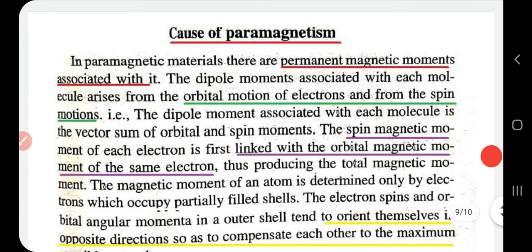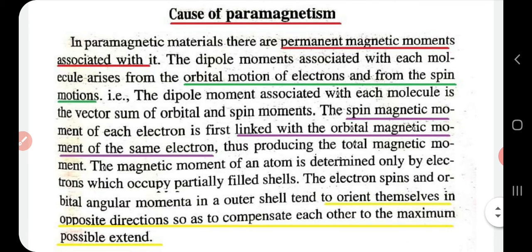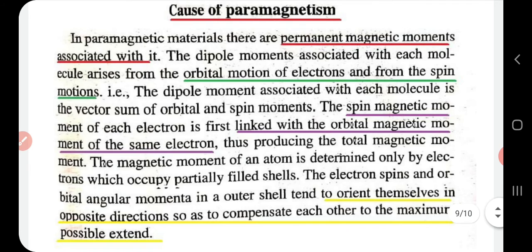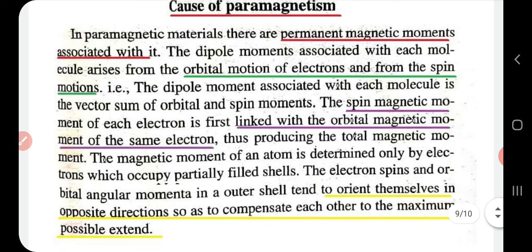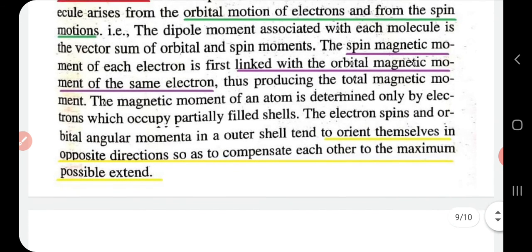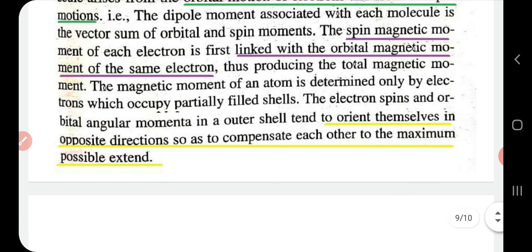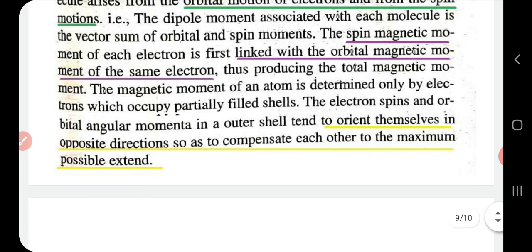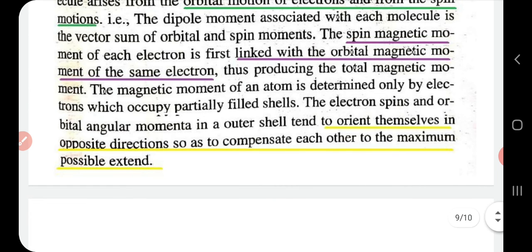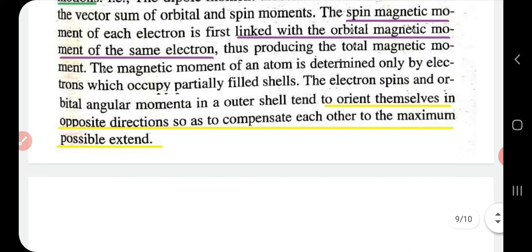Now, the reason for paramagnetism: in a paramagnetic material there are permanent magnetic moments. The dipole moments associated with each molecule arise from both orbital motion and spin motion of electrons — that is, the dipole moment is the vector sum of orbital and spin moments. The spin magnetic moment and orbital magnetic moment of the same electron are linked, producing a total magnetic moment.